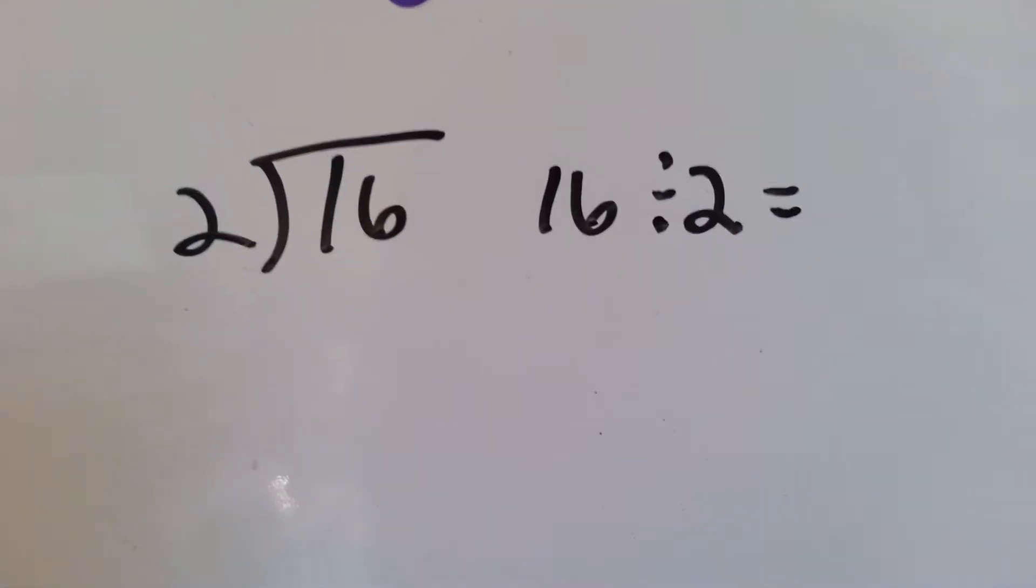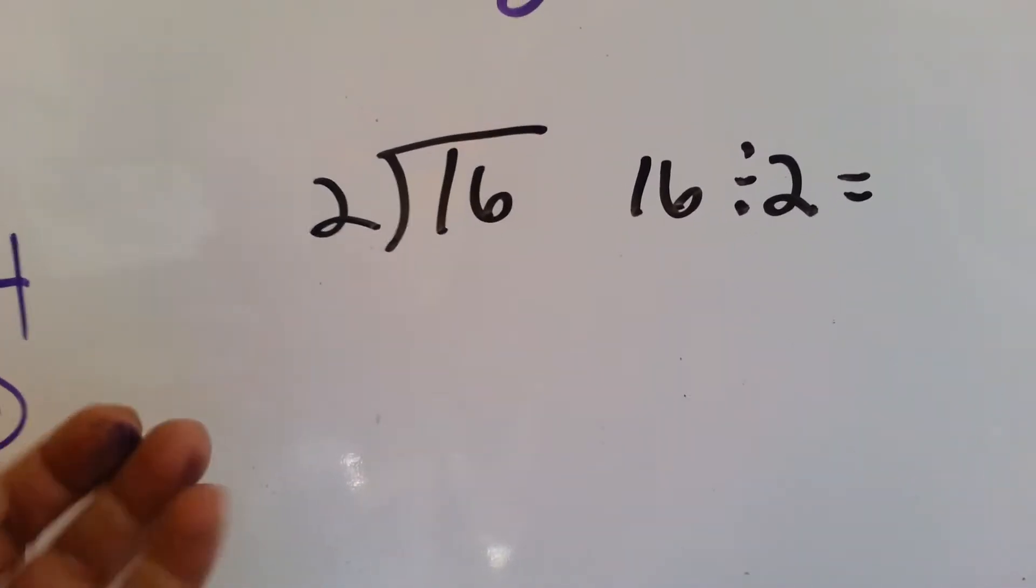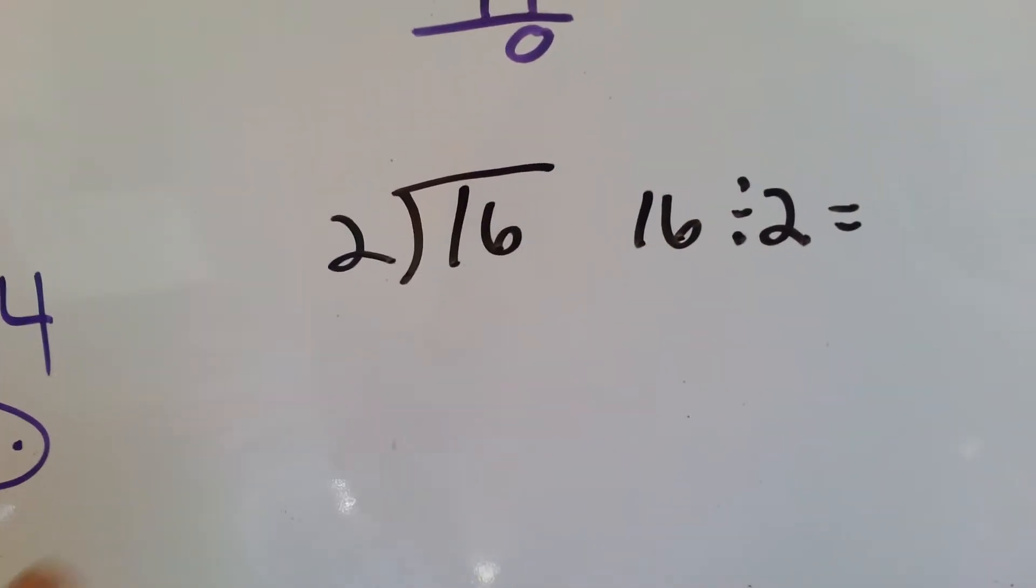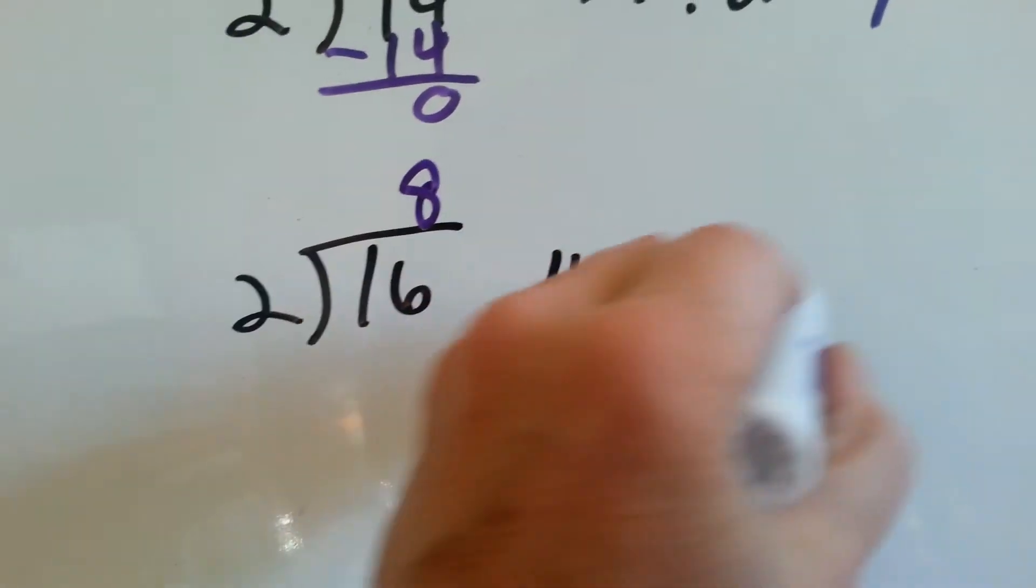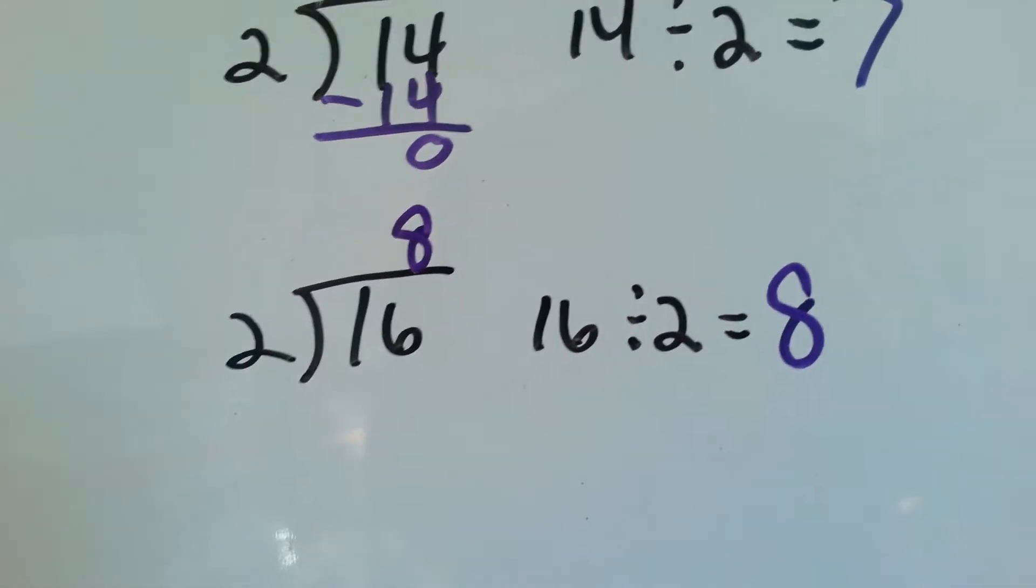Let's try this one. Count by 2's. 2, 4, 6, 8, 10, 12, 14, 16. 8 fingers. 16 divided by 2 is 8.